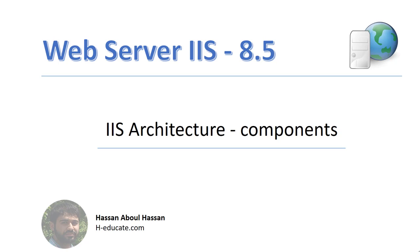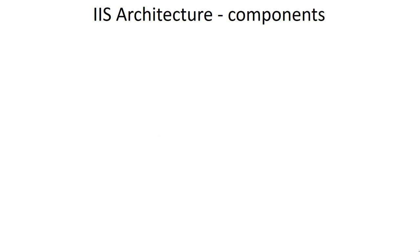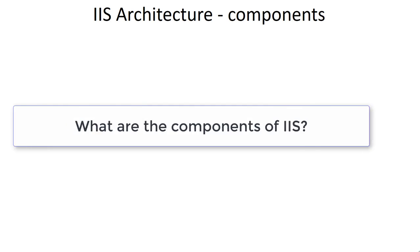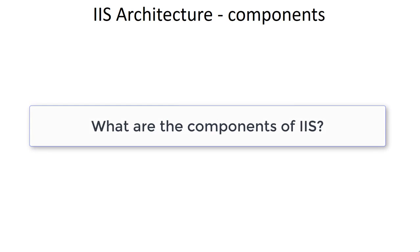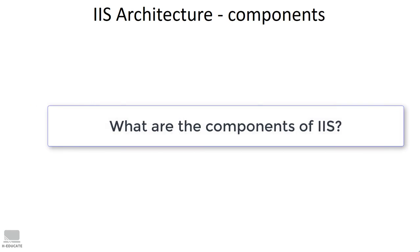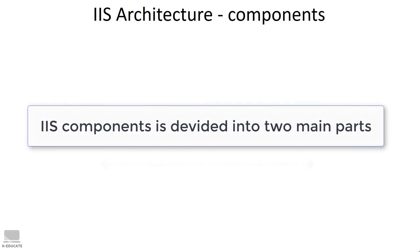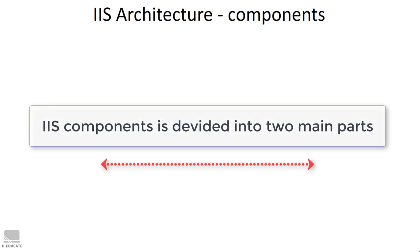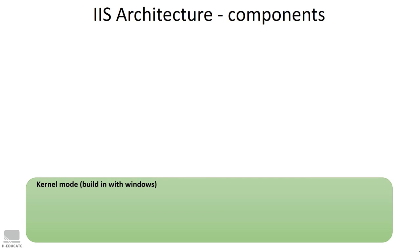In this lecture I want to talk a little bit about the IIS architecture. I don't want to make things complicated, but let's take a look at how IIS is architected and what components it has. Basically, the components of IIS are divided into two main groups: the kernel mode and the user mode.